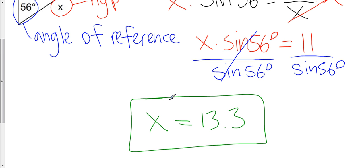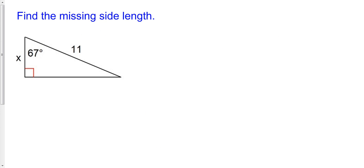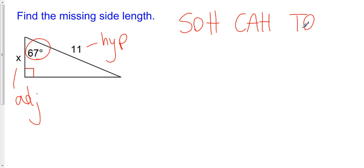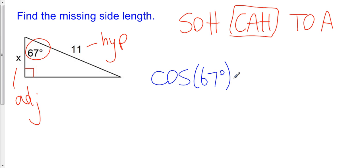Sometimes we can have x on top, and sometimes x on the bottom. In this last example, find the missing side: right triangle, given a side and an angle. Here's my angle of reference. This must be my hypotenuse, and this would be my adjacent side. Writing out SOH CAH TOA, I'm not talking about sine this time — I don't have O and H, I have A and H. That looks like CA, so cosine. The cosine of 67 degrees is equal to the adjacent over the hypotenuse, which is x over 11.